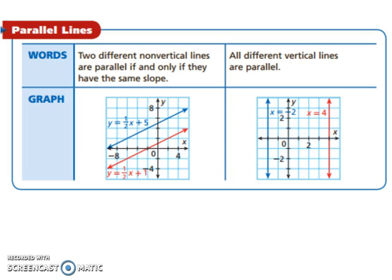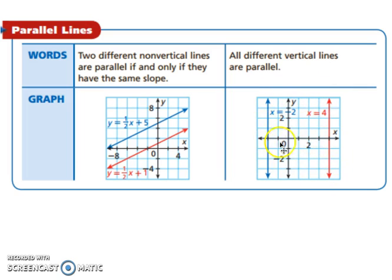Let's start with parallel lines. Two different non-vertical lines are parallel if and only if they have the same slope. If their slopes are the same, they're never going to intersect. All vertical lines have an undefined slope, so they're all going to be parallel — they're never going to intersect, and they're on the same plane.